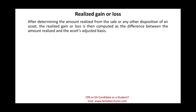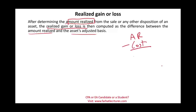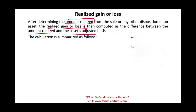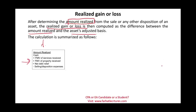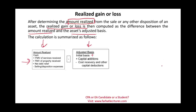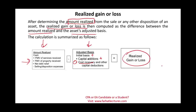Now let's talk about realized gain or loss. After we determine the amount realized, we take the amount realized minus the cost, and that gives us the realized gain or loss. More specifically: amount realized minus the adjusted basis of the property — which is the initial basis plus capital additions minus any cost recoveries such as depreciation — gives us the realized gain or loss. Remember, although an amount is realized, it doesn't necessarily mean it's taxable, nor may a loss be deductible. That's the recognized part.